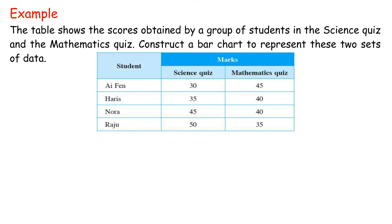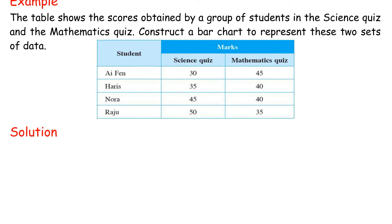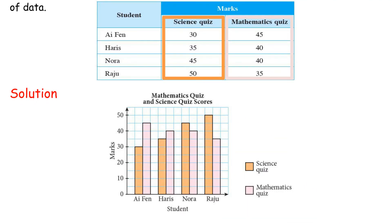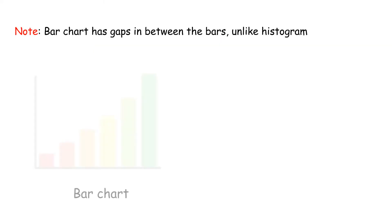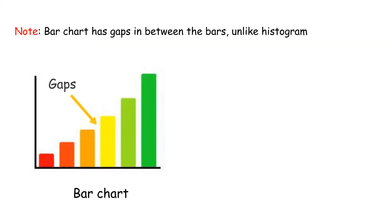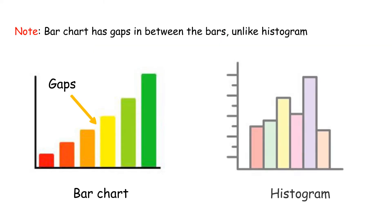Example: The table shows scores obtained by a group of students in science and mathematics quizzes. Construct a bar chart to represent these two sets of data. A dual bar chart is suitable for comparing two sets of data. Note: a bar chart has gaps between the bars, unlike a histogram.